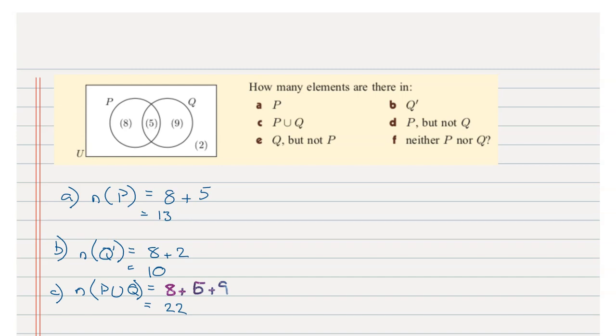Now going over to d, it's asking for the number of elements in P but not Q. So I'll simply write it out. The elements in P is 8 plus 5, but notice it's asking not Q so it doesn't want to include this area here so I'll get rid of the 5. So adding this all together the two fives cancel and we're only left with 8.